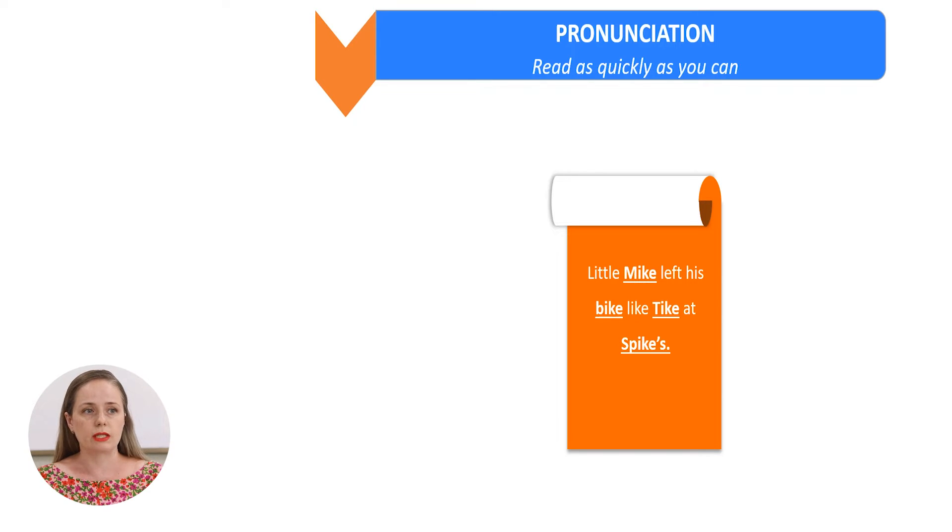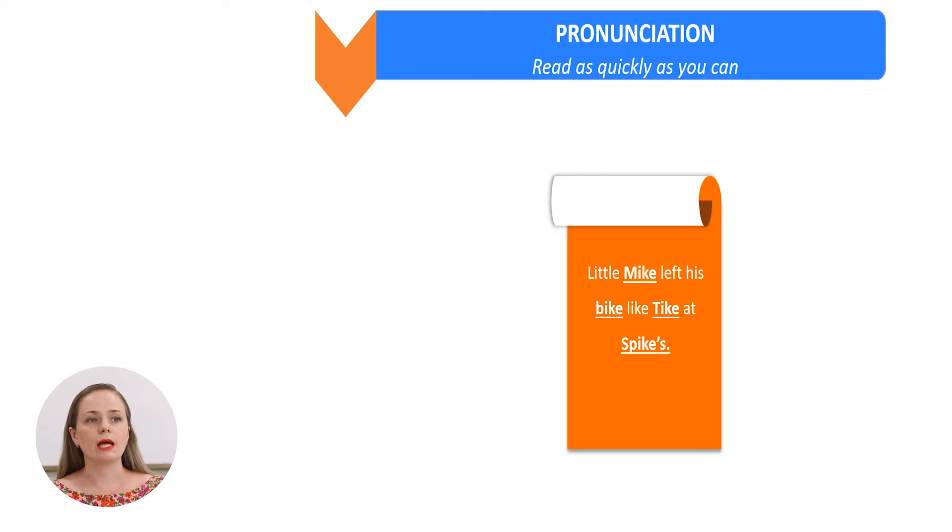Little Mike left his bike like tyke at spikes. Now, let's try a little quicker. Little Mike left his bike like tyke at spikes. Very good.